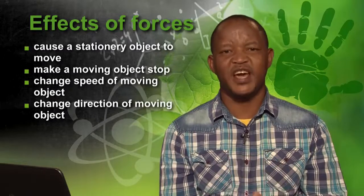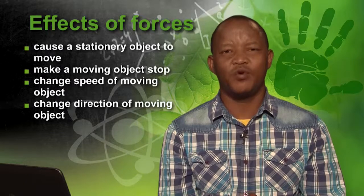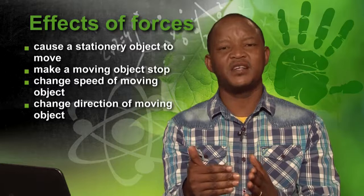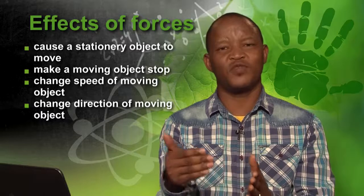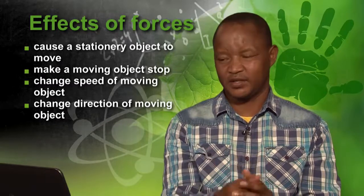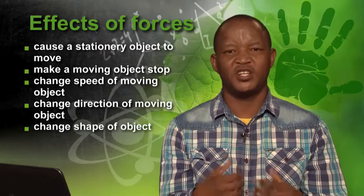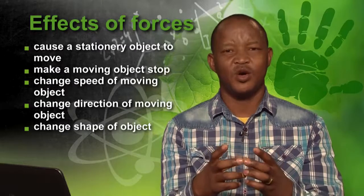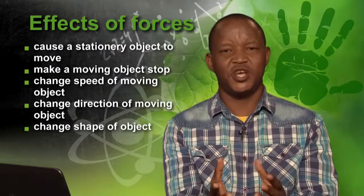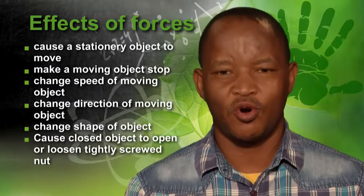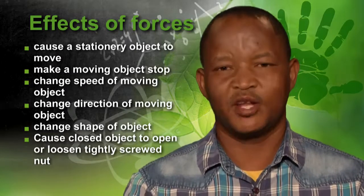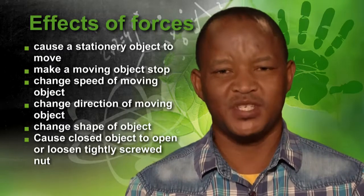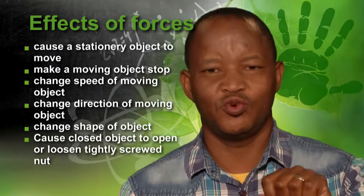Force can also change the direction of a moving object. For example, if a car is moving and another car hits it on the side, the car that has been hit will change direction because of the force applied by the incoming car. Force can also change the shape of an object — if you have a cylindrical cold drink can and you squeeze it, that shape will change. Force can also cause a closed object to open, for example twisting the cap of a water bottle, or pushing a door lever down.